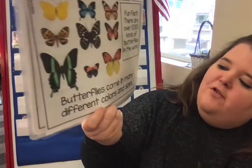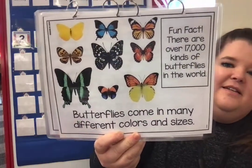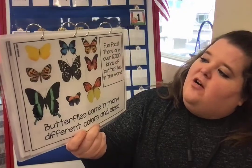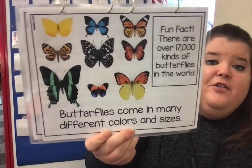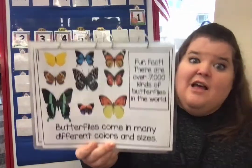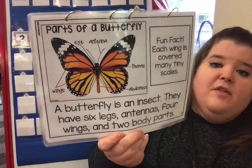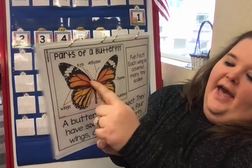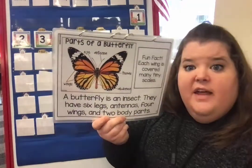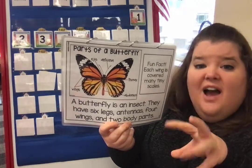Here's my little book — it says 'All About Butterflies.' Butterflies come in many different colors and sizes. There are over 17,000 kinds of butterflies in the world — that is a lot! Here we have the parts of the butterfly. Its eyes are down here, and it has antennae. We learned yesterday that they use their antennae to smell, hear, touch, and sometimes even to taste.